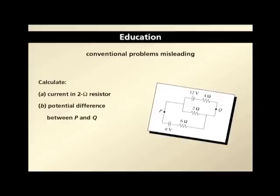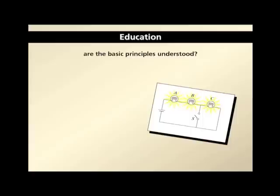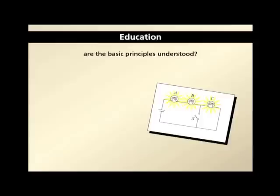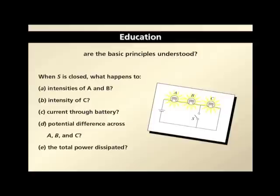This was problem five of five on a midterm examination. On that same exam, I put this question: three identical light bulbs A, B, C are connected in series — one after the other — to a battery, much like lights in a Christmas tree. There's a switch S that shorts out the last light bulb. The students were asked: when switch S is closed, what happens to the intensity of A and B, to the intensity of C, to the current through the battery, to the potential differences across A, B, C, and to the total power dissipated? The only answer needed was 'increases,' 'decreases,' or 'stays the same.' No calculations.